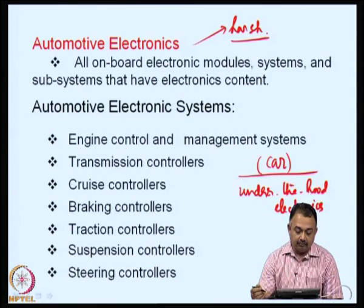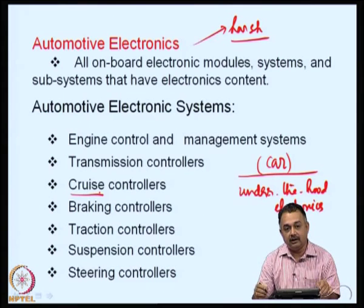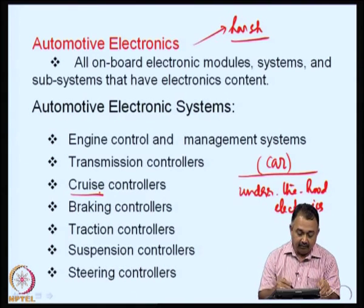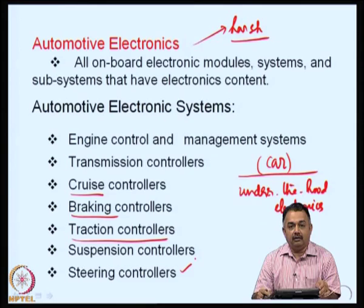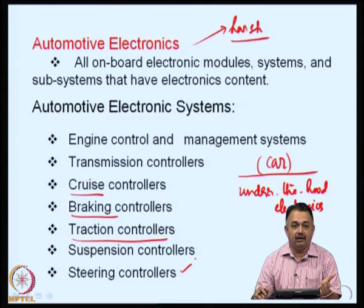The representative products in automotive electronic systems include: engine control and management systems, transmission controllers, cruise controllers — today's cars come with auto cruise facility — braking controllers, traction controllers, suspension controllers, and steering controllers. New models of automotive cars are in the market today, and some cars come with as many as 50 to 55 microprocessors under the hood, distributed in various sections of the automobile.